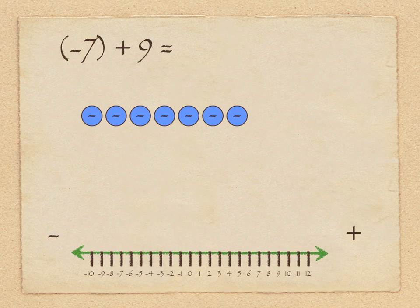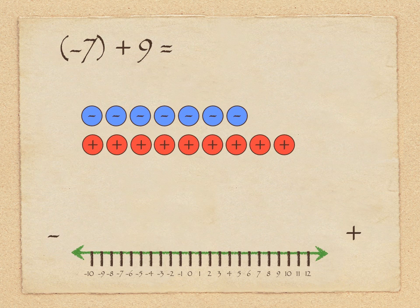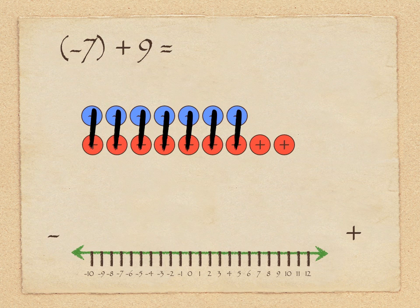This time we're at negative 7 and we're going to add positive 9. We can see 7 negative counters on the screen, and we're going to add in 9 positives. Just like last time, we can't leave it with negatives and positives mixed — we need to start cancelling. We group any positive with a negative, and after we group together the 7 different zeros, we're left with positive 2. On the number line, starting our caveman at negative 7, facing the plus sign direction, he walks forward and ends at position 2.